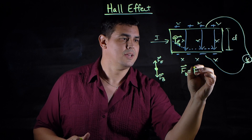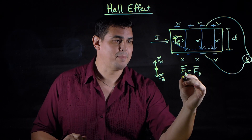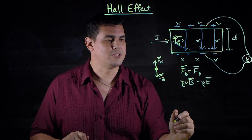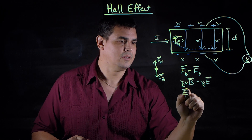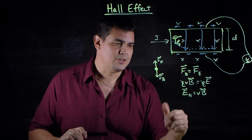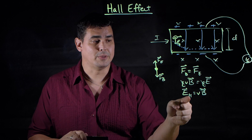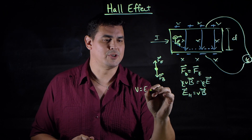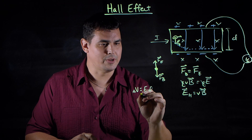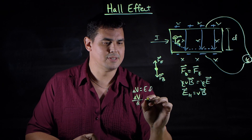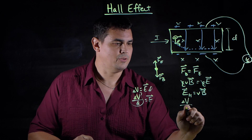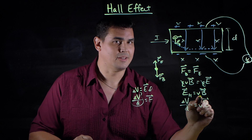Let's set these two forces equal to each other. My magnetic force equals my electric force. Substituting in: magnetic force is QVB, and electric force is charge times electric field. Q cancels out, so I get that E — the Hall electric field — is equal to the velocity times the magnetic field. Now, voltage equals electric field times distance, so if I take V = Ed and solve for E, that gives me voltage over distance equals E. Plugging that in, I have voltage over distance equals velocity times magnetic field.